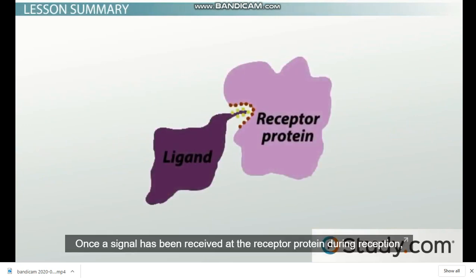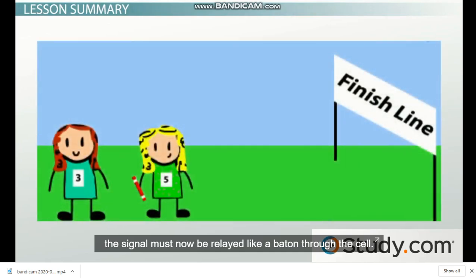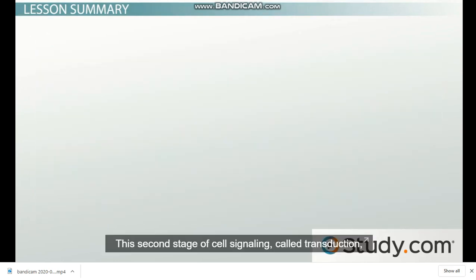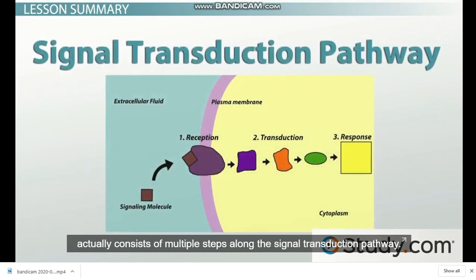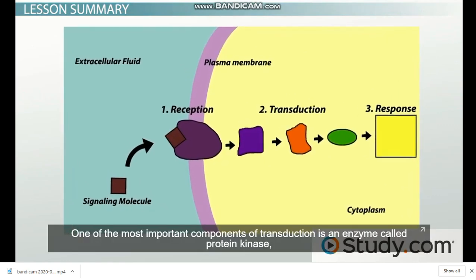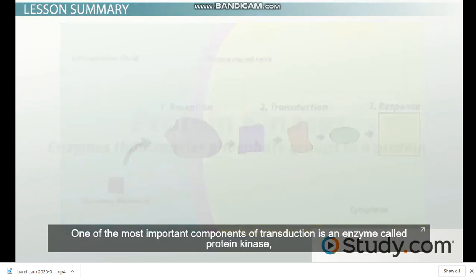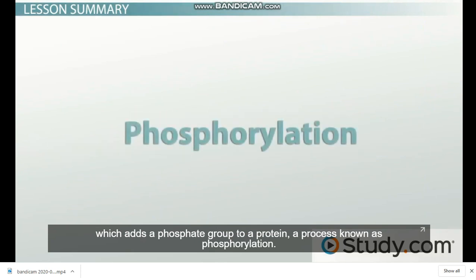Once the signal has been received at a receptor protein during reception, the signal must now be relayed like a baton through the cell. This second stage of cell signaling, called transduction, consists of multiple steps along the signal transduction pathway. One of the most important components of transduction is an enzyme called protein kinase, which adds a phosphate group to a protein — a process known as phosphorylation.